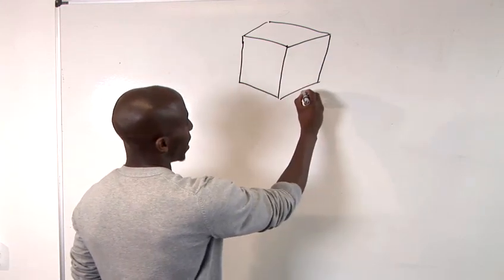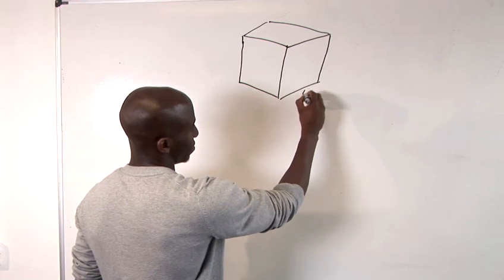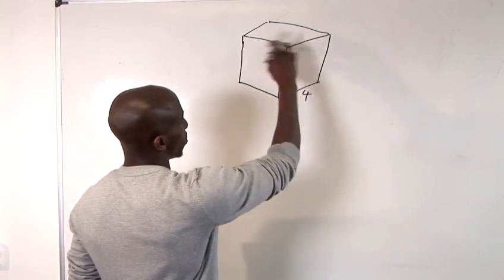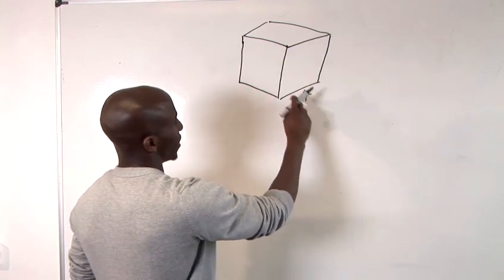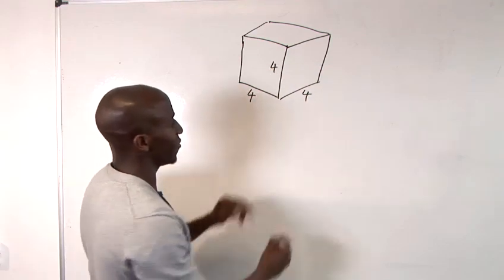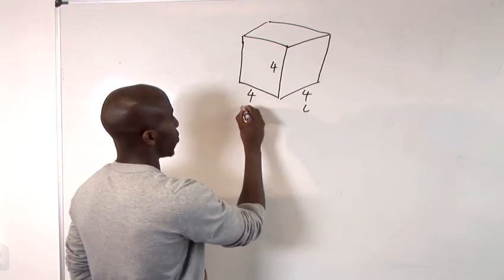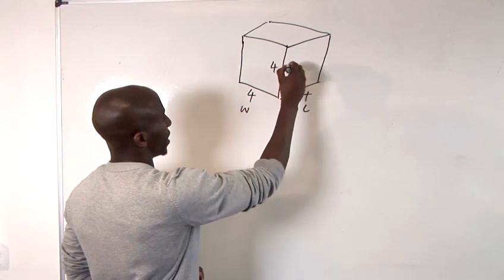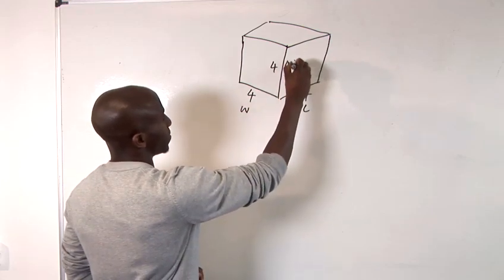If you have any one side as four, then all other sides have the same value. So four, four, four. This would be your length, this would be your width and this would be your height. Put those in brackets.